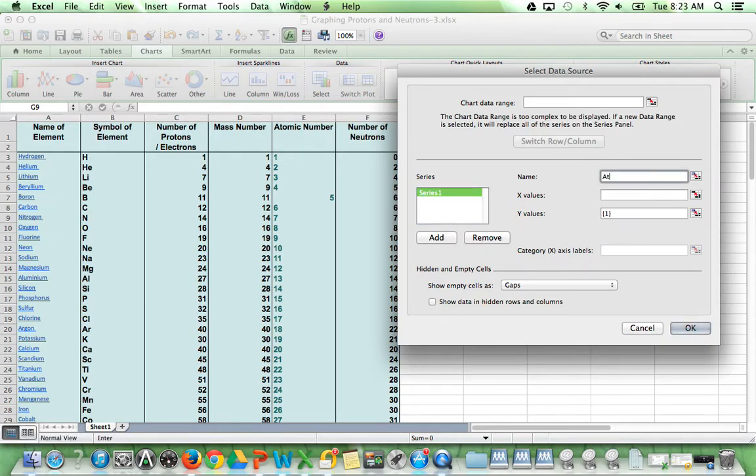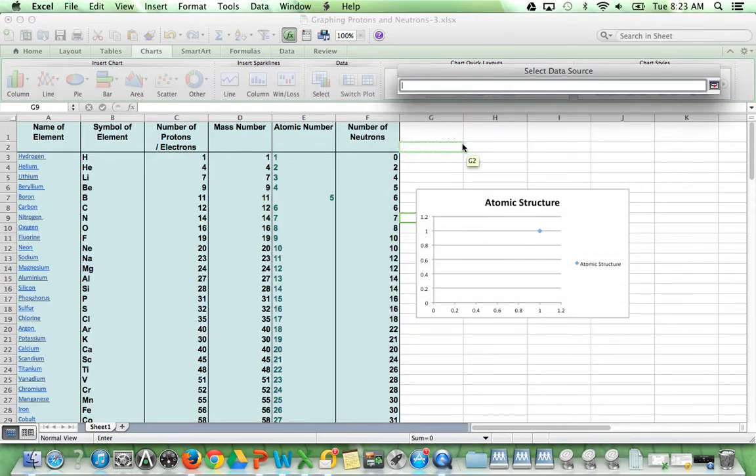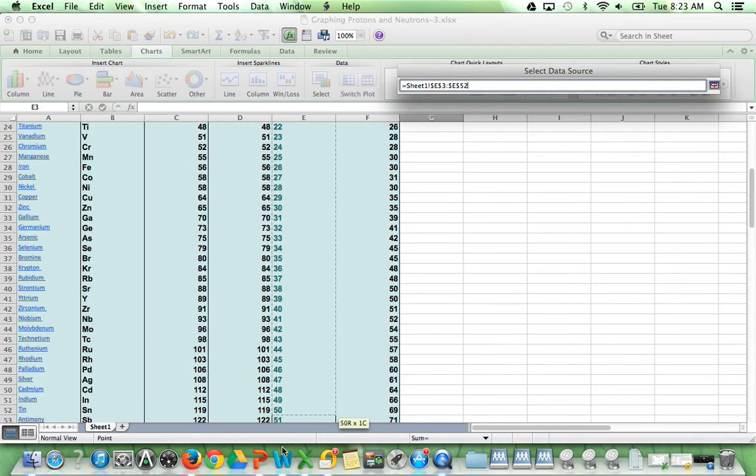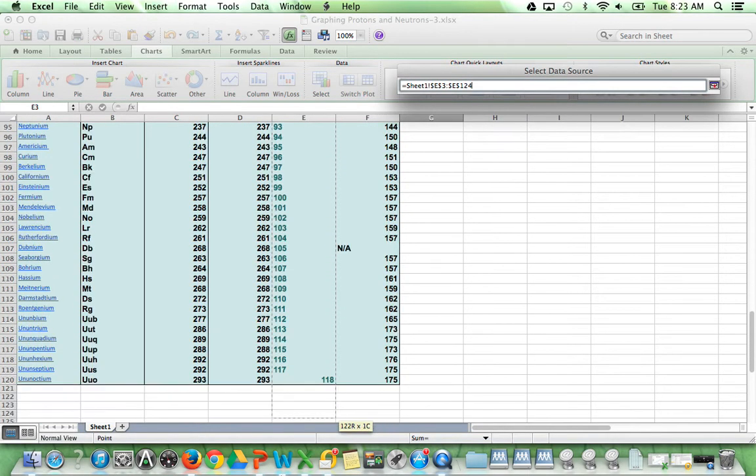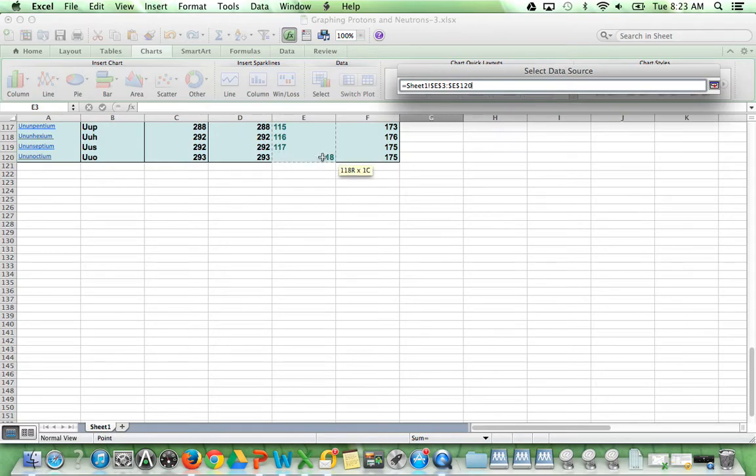The name is going to be Atomic Structure, and now we will select our x-values. Click this icon to select our x-values. We're going to click and highlight all of the atomic numbers from 1 all the way down to 118. Click the icon to jump back.